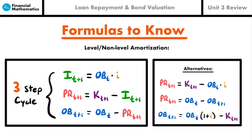The first set is probably the most important for amortization — I refer to it as a three-step cycle. You start by calculating the interest at time t+1 by taking the previous outstanding balance OB_t and multiplying by the interest rate. Then you calculate the principal, which is the amount you're actually paying off the loan at time t+1, by taking the payment amount and subtracting out the interest. Remember, every payment is split into two parts: principal and interest.